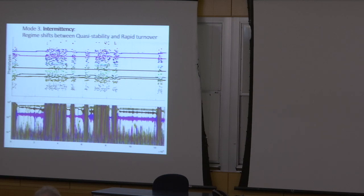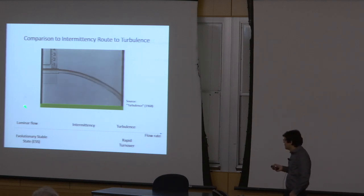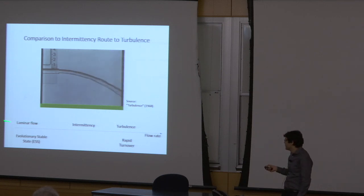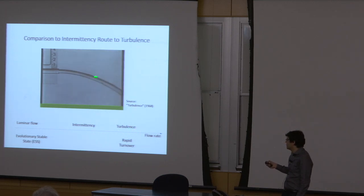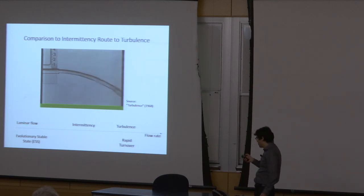In between rapid turnover and the evolutionarily stable state regime, we get pronounced intermittency: for a while you have a five-strain community that looks stable and persists for thousands of generations, then suddenly it collapses into chaotic dynamics for thousands more generations, and eventually finds a stable community again — only to collapse again. This type of eco-evolutionary dynamics was unexpected and undescribed in the literature, but from a physics perspective it makes total sense.